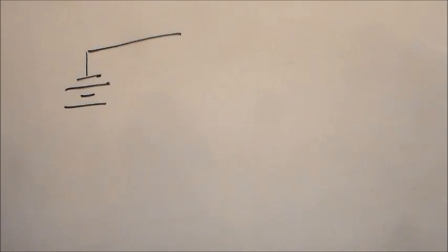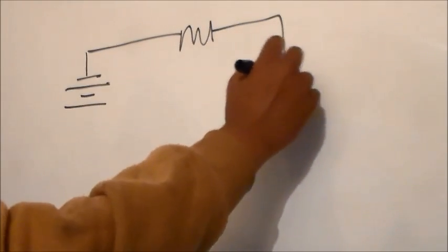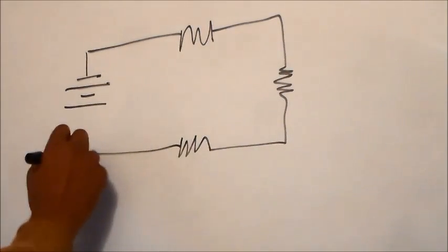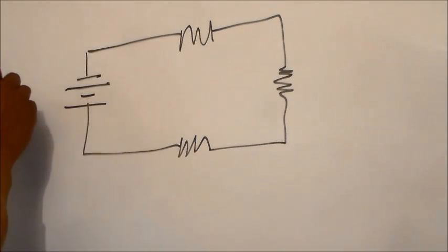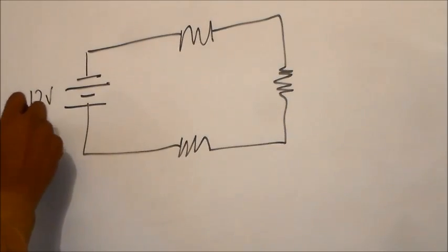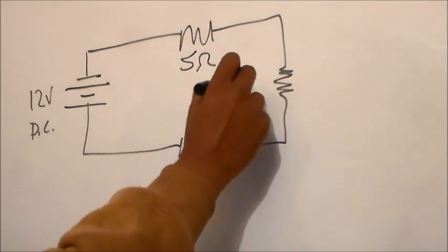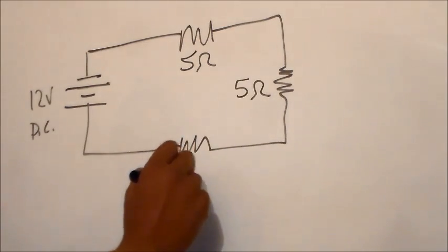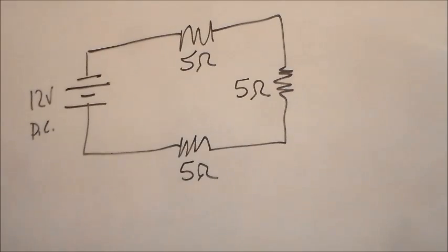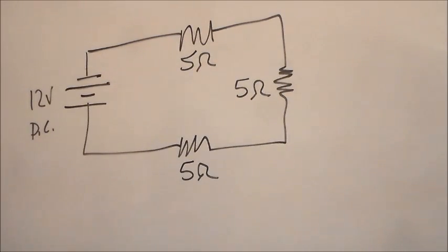For this next question, we have a resistor here, a resistor here, and a resistor here. This battery is 12 volt direct current. We have a 5 ohm resistor, a 5 ohm resistor, and a 5 ohm resistor. A couple of things we're going to find: the total resistance in a series circuit, and then we're also going to compute the voltage drop across each resistor. The first thing we need to do is find our total resistance.